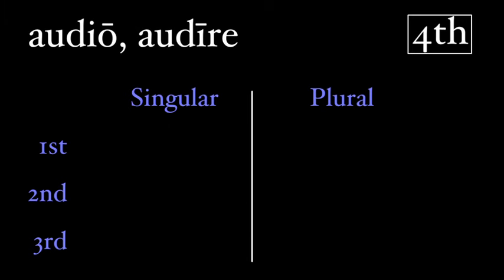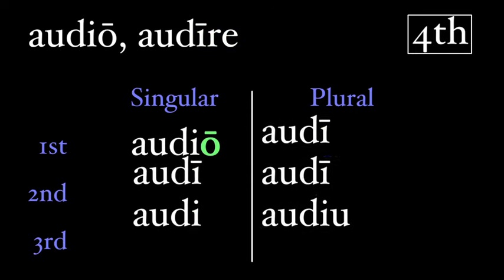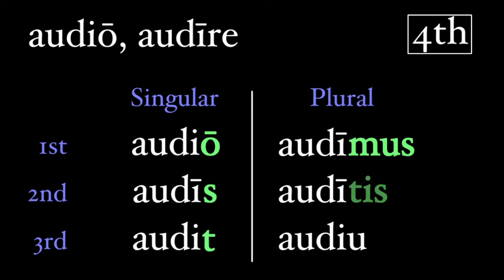Fourth conjugation verbs, with the second principal part ending in a long i, re, are a bit easier, but still similar to the third conjugation. So, we take our first principal part and bring that down, audio. Then we take our present stem, audi, and add our personal endings to this. Audis, audit, audimus, auditis. The third person plural is a bit different, and we have to add a u, audiunt. And you'll notice that it's similar to the third conjugation form, trahunt.